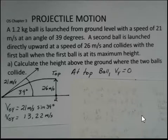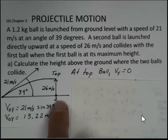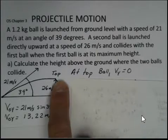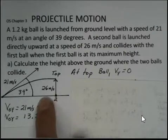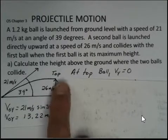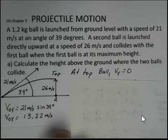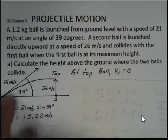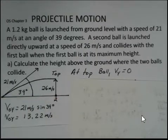At that highest point, it collides with ball number two that's been launched vertically straight upward at 26 meters per second. We want to calculate that height where the ball hits, and we're going to calculate the time delay between the launch of ball two and ball number one.